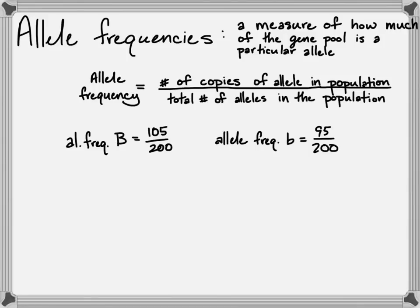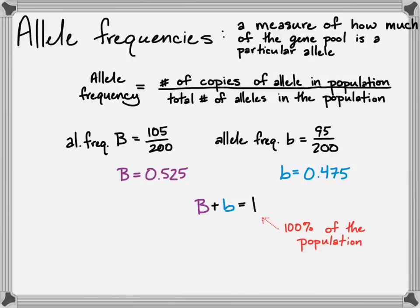If you solve that into a decimal, you get 0.525 for the dominant allele and 0.475 for the recessive allele. They are almost 50-50 in the population, and they should add up to 1 because they represent 100% of the population.